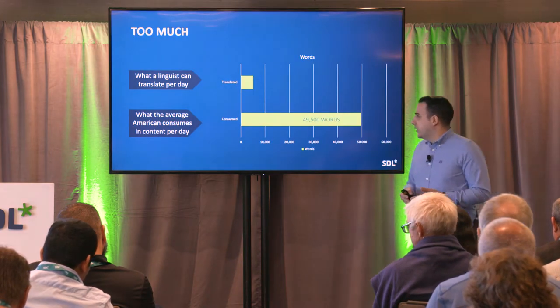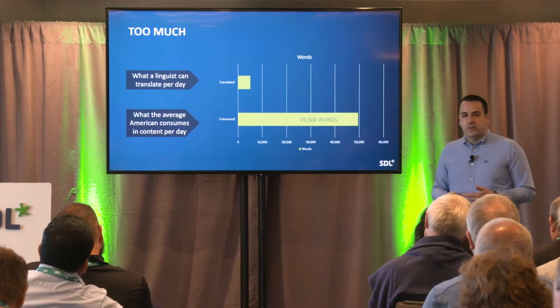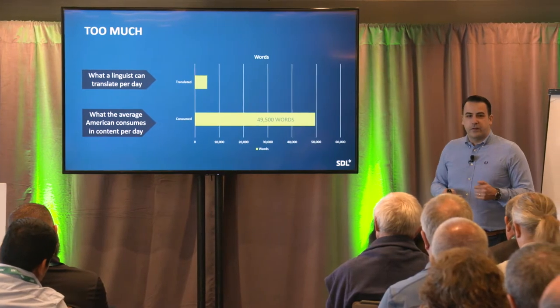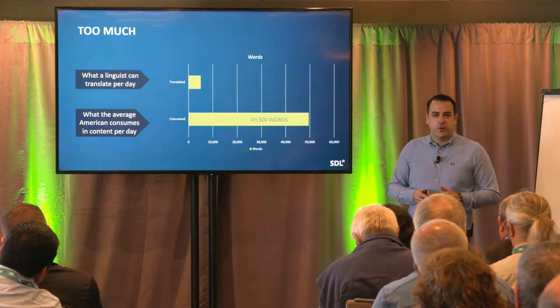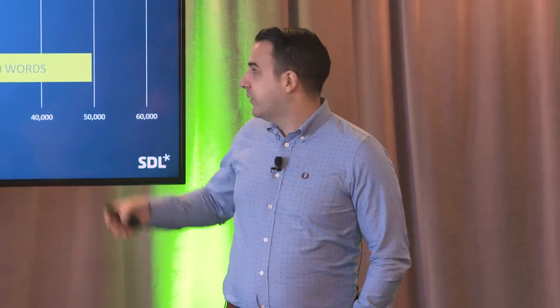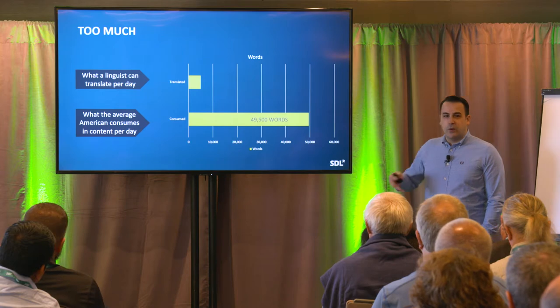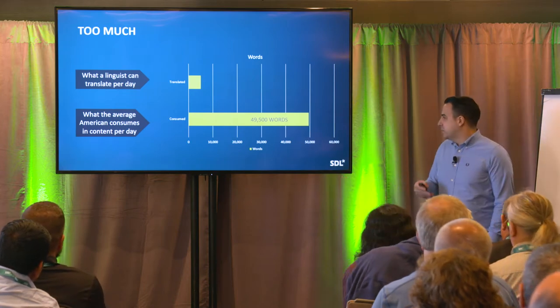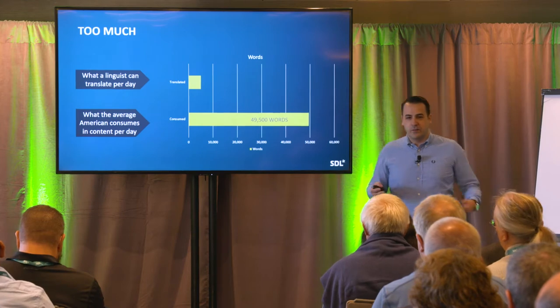If we look at the average consumer versus what a linguist can translate per day, you'll see there's a big problem. Typically a professional translator can translate on average about 5,000 words a day — from one language into another. It varies depending on subject matter and use of machine translation, maybe between 2,000 and 10,000. But contrast that against what the average American consumer consumes in content per day — about 50,000 words. You can immediately see the disconnect.